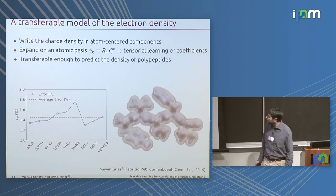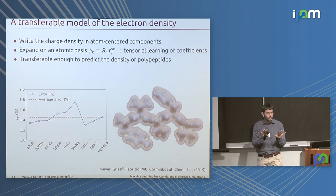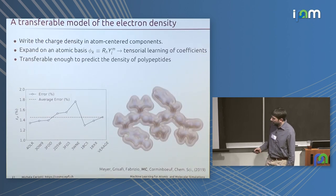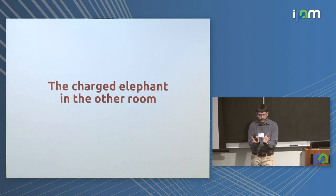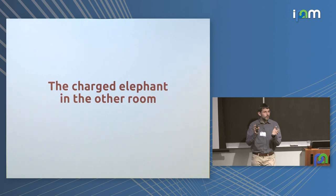The bottom line is that this works very well: we can train the model on dimers of tiny organic molecules and predict the density of something as complicated as a polypeptide. Up to this point I have discussed a scheme that is local — taking the representation of the atomic structure in the vicinity of an atom and assuming that everything can be broken down into these local pieces.